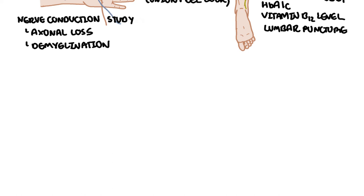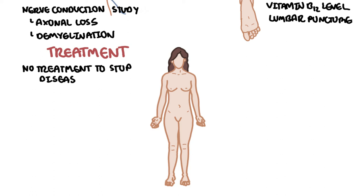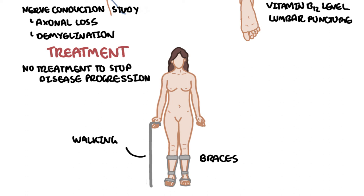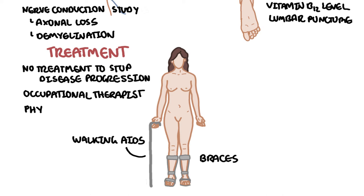There is no treatment that can stop the progression of the disease, and so treatment is usually supportive — wearing braces to help correct foot drop or orthoses, walking aids such as a walking stick. Sometimes orthopedic surgery is needed to stabilize the foot. Occupational therapy and physiotherapy play a big role in the management of patients with Charcot-Marie-Tooth disease.